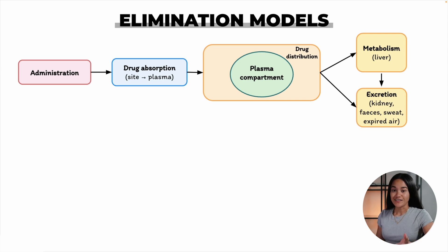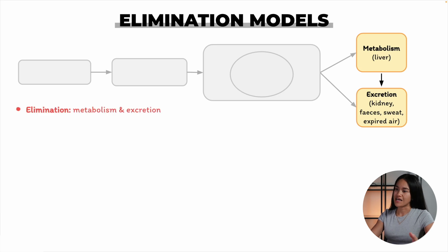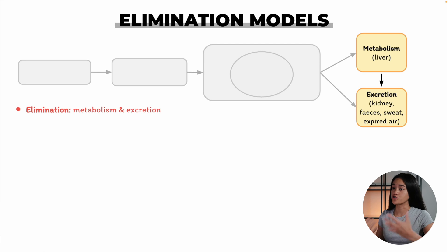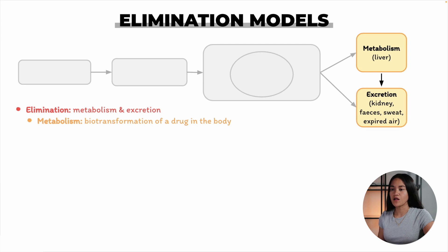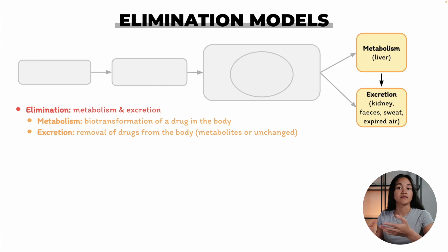Once a drug enters the body, the process of elimination begins. Elimination involves metabolism and excretion — it refers to the process by which a drug is removed from the body. This includes both the metabolism of the drug into its metabolites and the excretion of these metabolites and unchanged drug through the body's various elimination pathways, such as the kidneys, liver, lungs, and skin.